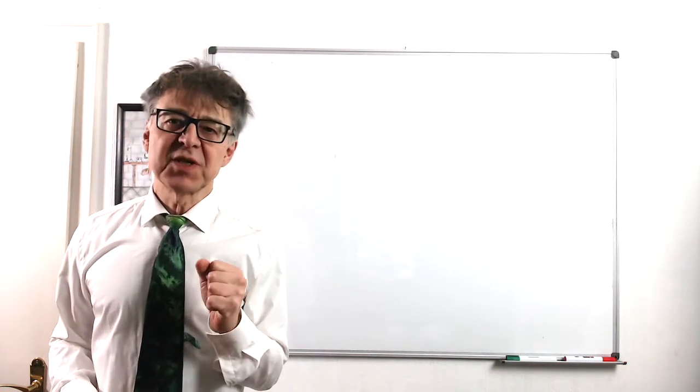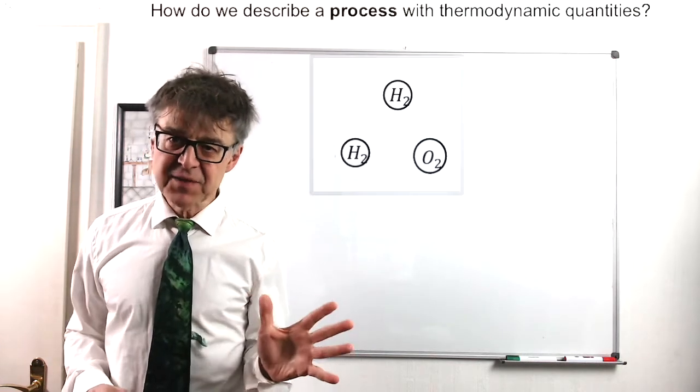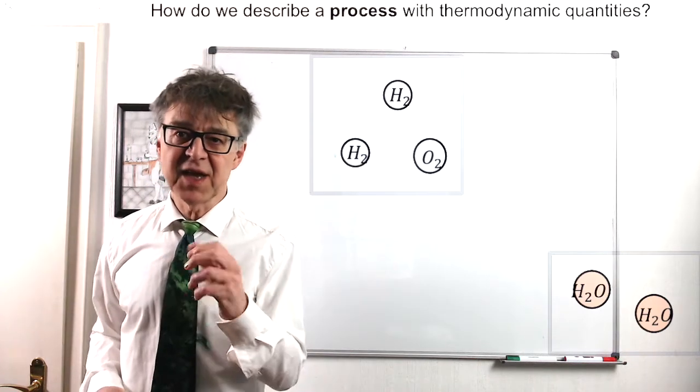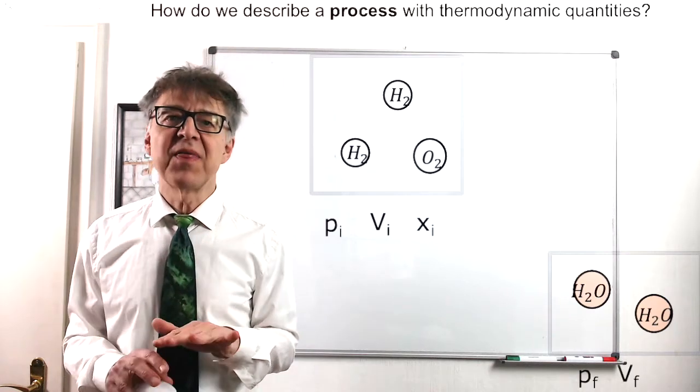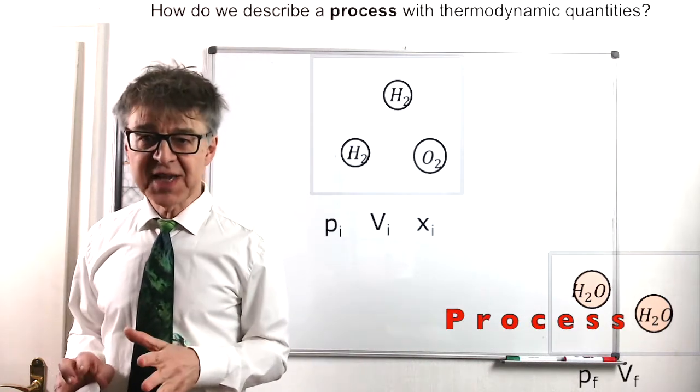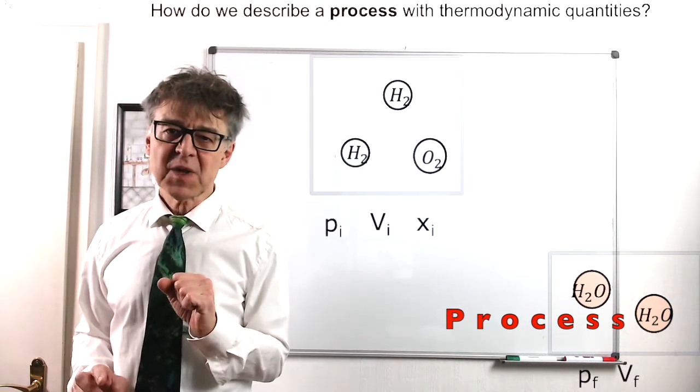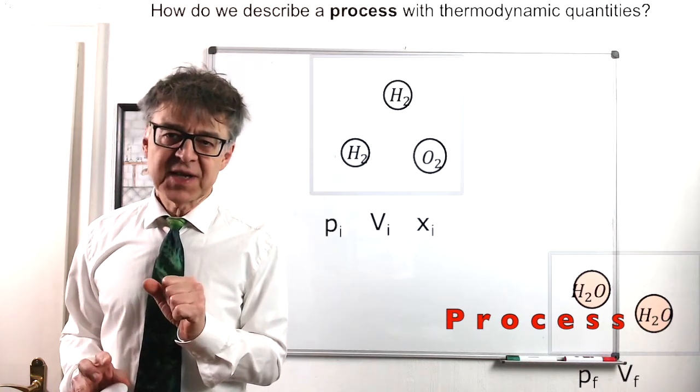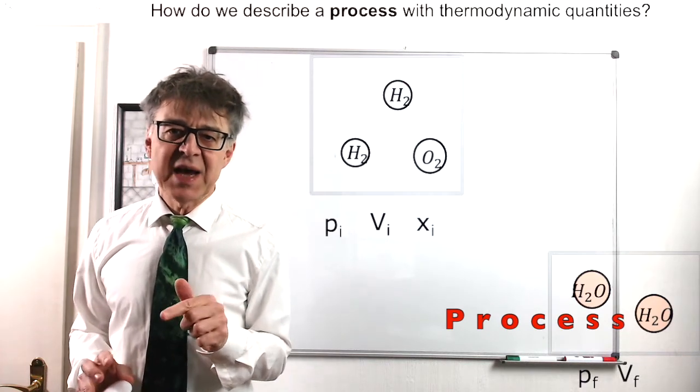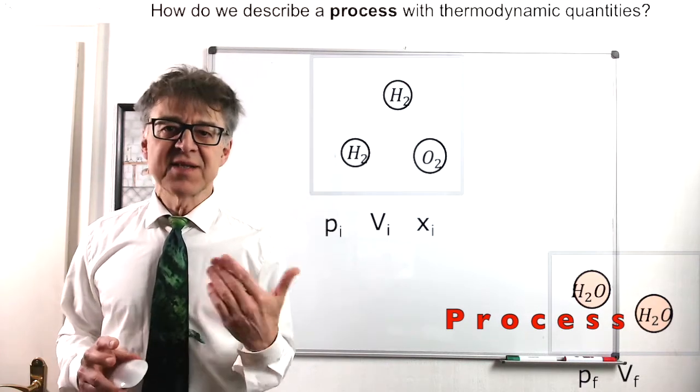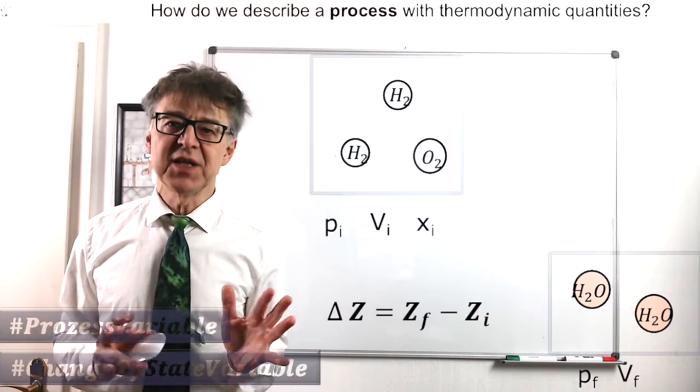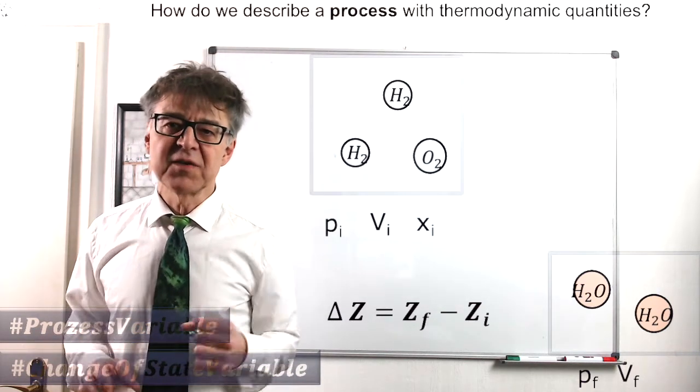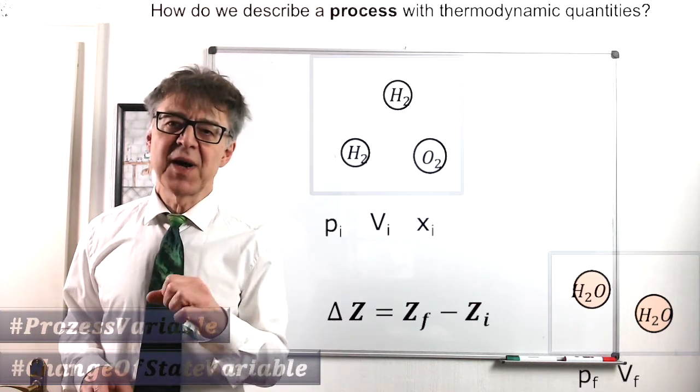Back to our oxyhydrogen gas reaction. We have described the reactants thermodynamically, and also described the products with state variables like P, T and X. And now we are going to describe the reaction, the process, from initial state I to final state F. A process is always a change of condition, a change of state. In this case, a chemical change of state, and is described by a delta. Delta Z means change of the state variable Z from initial value, Z initial, to the final value, Z final.